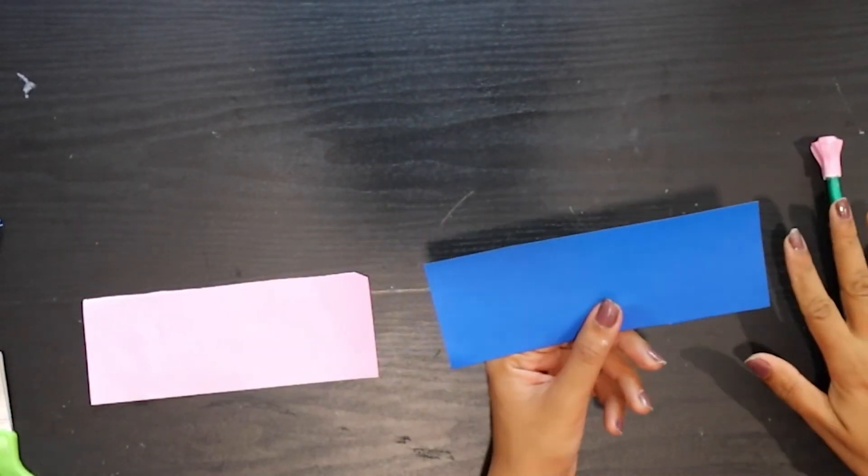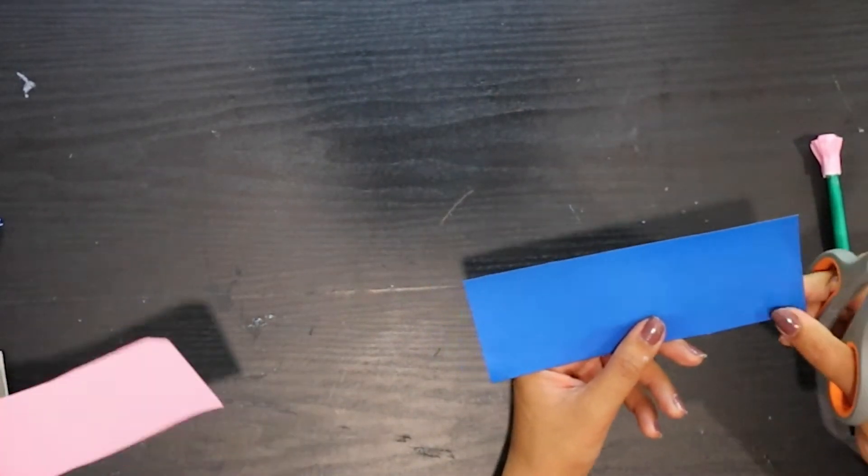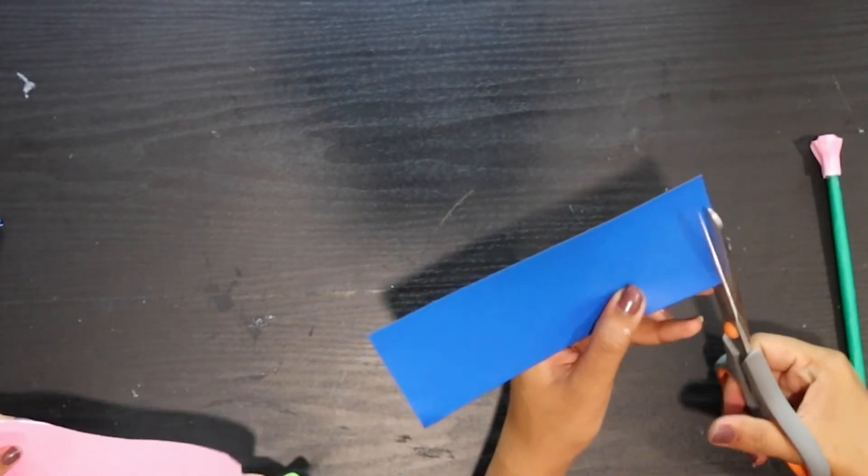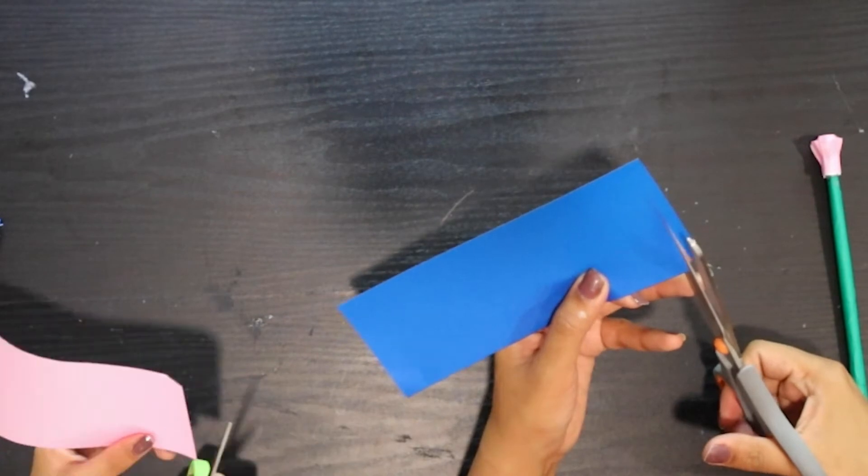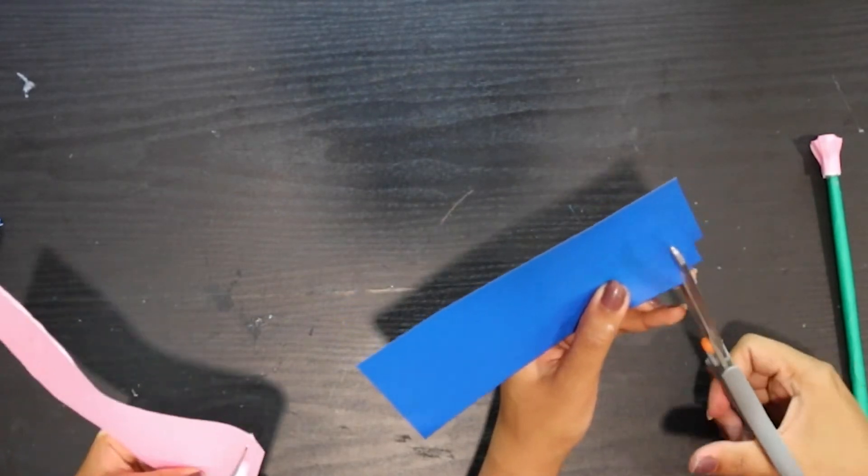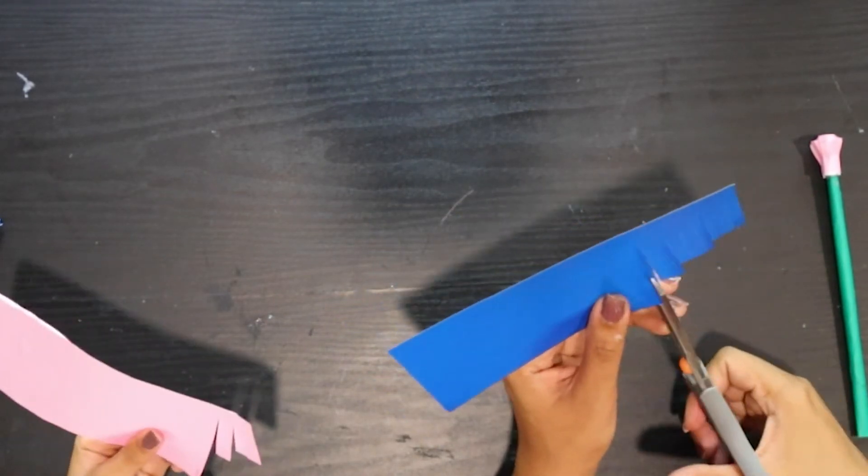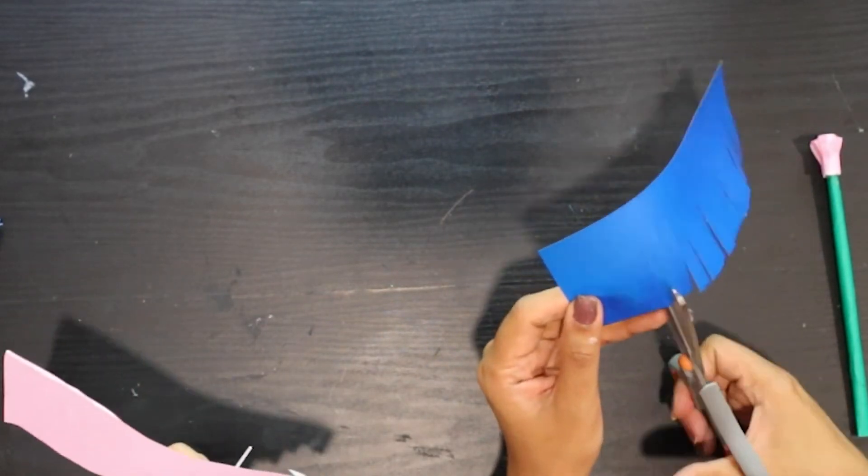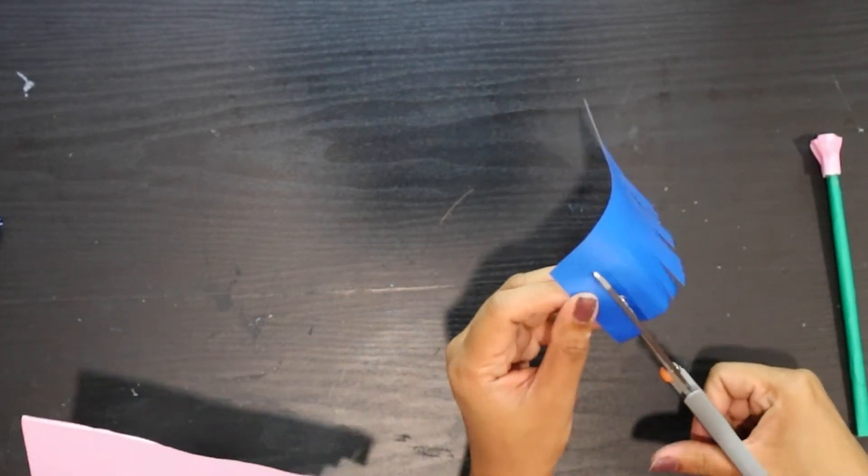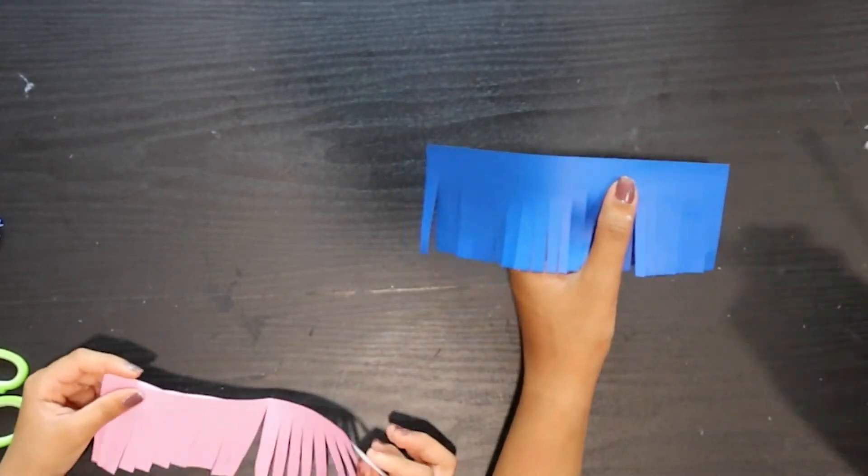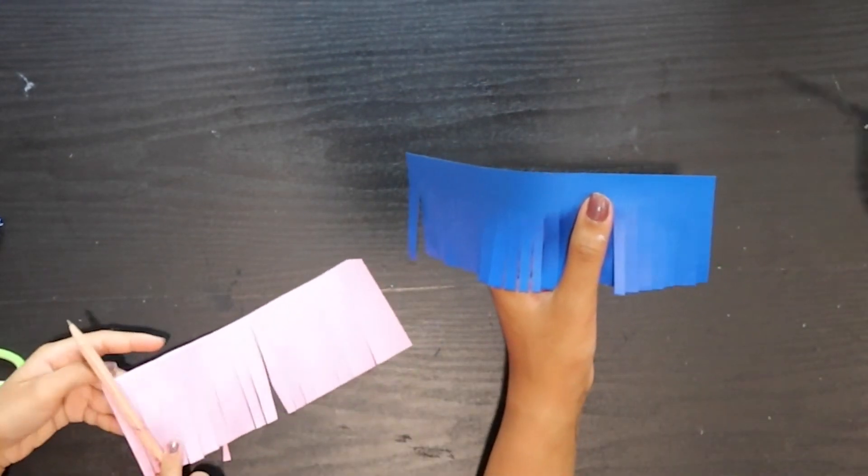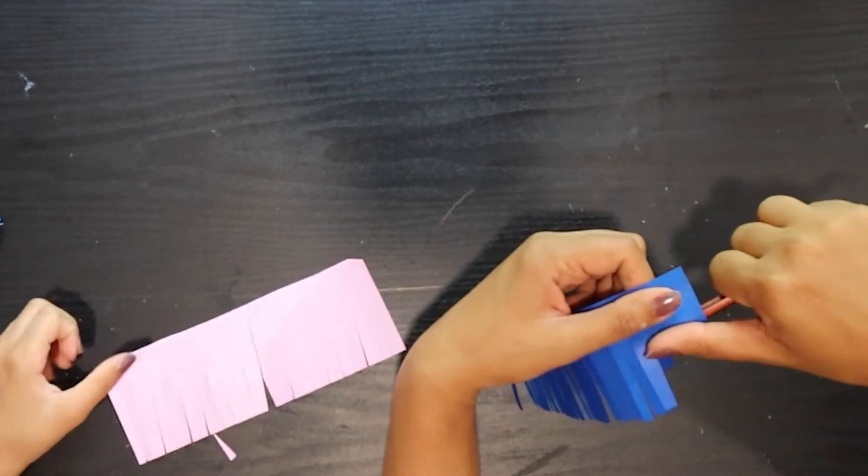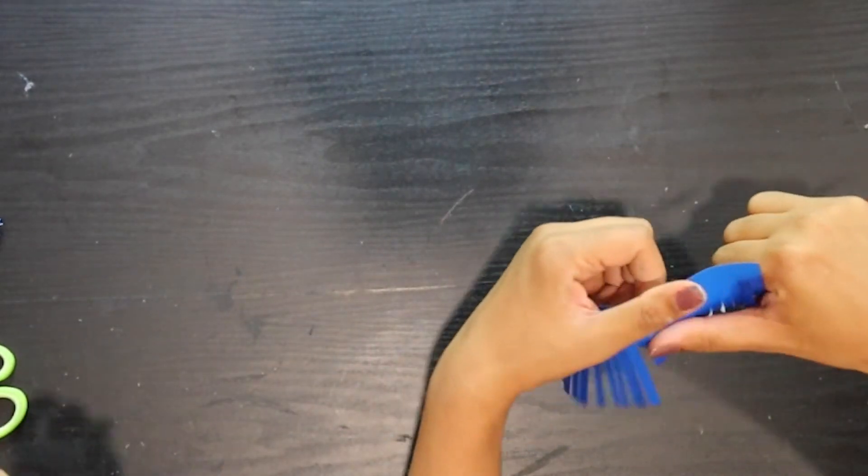Now we'll take the other strip, the wider one, and this is very easy. Now you only have to cut it, cut three-fourth of the strip like this. We have to shape it up so take a pencil and then shape it like outwards like this.